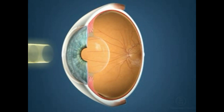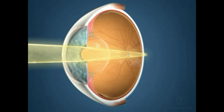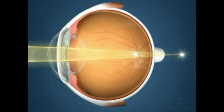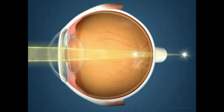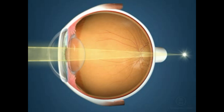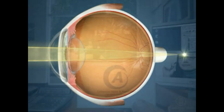Astigmatism is a refractive error in which light rays entering the eye do not focus onto a single point needed for clear vision. Instead, light focuses on two distinct points, neither of which may be on the retina. Where these images focus depends on whether the astigmatism is associated with myopia or hyperopia. Astigmatism causes a distortion or blurring of images at all distances, nearby as well as distant.